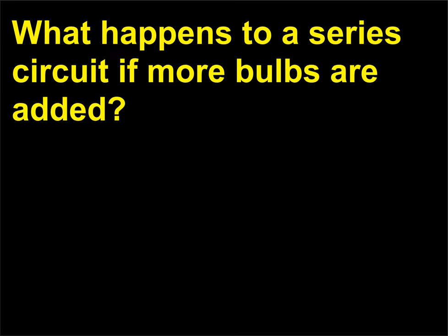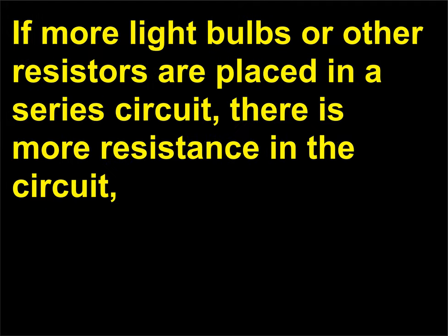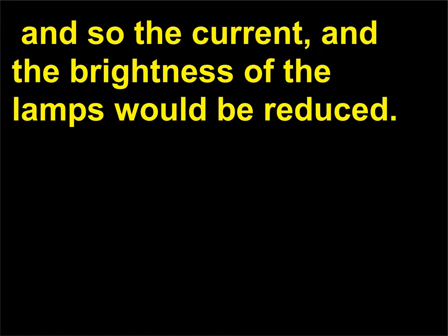What happens to a series circuit if more bulbs are added? If more light bulbs or other resistors are placed in a series circuit, there is more resistance in the circuit, and so the current and the brightness of the lamps would be reduced.